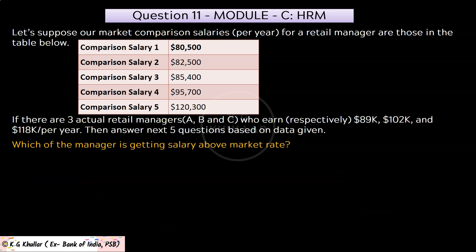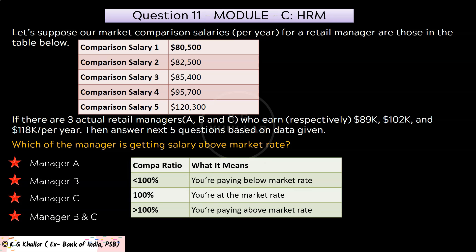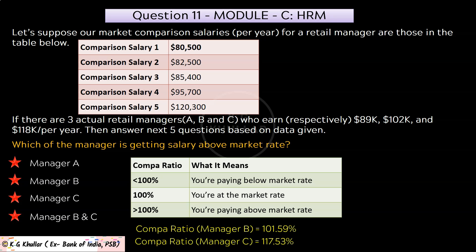The next question is: which of the managers is getting a salary above market rate? We can interpret compa ratio as follows: if compa ratio is less than 100%, you are paying below market rate; if exactly 100%, you are paying at par with market rate; and if greater than 100%, you are paying above market rate. The compa ratios of both Manager B (101.59%) and Manager C (117.53%) are above 100%, so both are getting salaries above market rate. The correct option is option D.